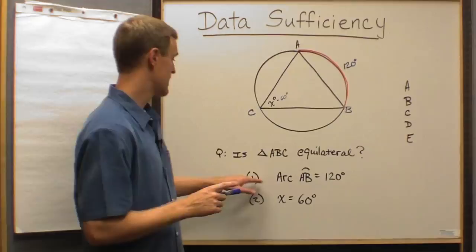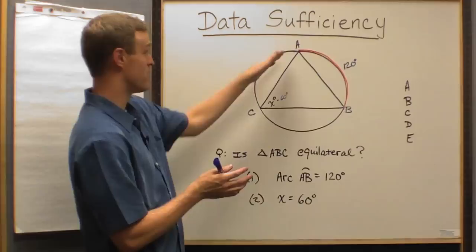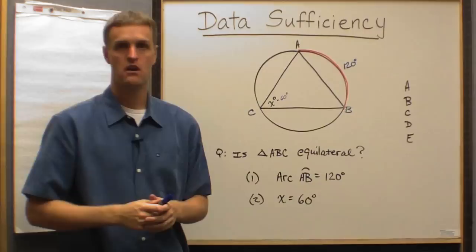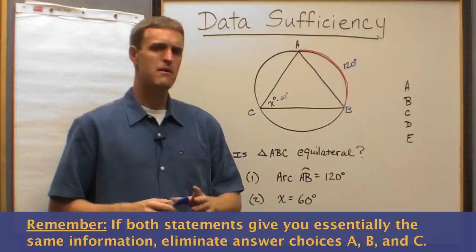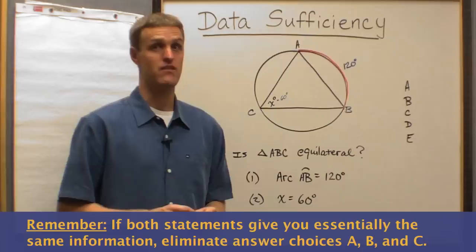Likewise, if statement number two tells me that X is 60 degrees, I know by visually seeing that angle ACB is an inscribed angle, it's going to create a degree measure of 120 degrees for the arc that it creates. And so they've given me the same information.